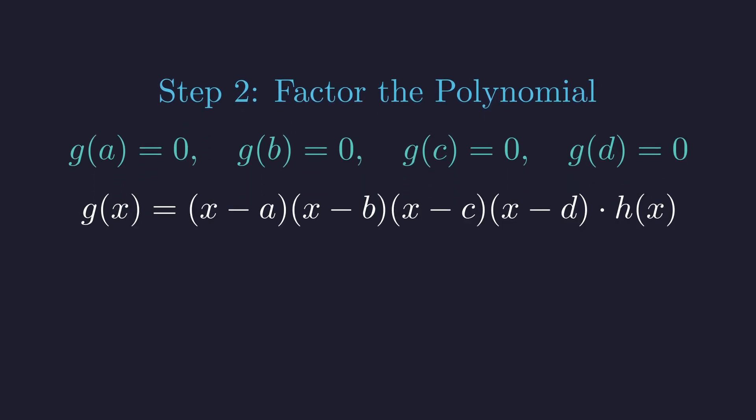Since we have four distinct roots, we can factor out four linear terms. This means g of x equals the product of x minus a, times x minus b, times x minus c, times x minus d, all multiplied by some remaining polynomial h of x.